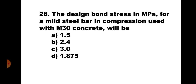Question 26. The design bond stress in MPa for a mild steel bar in compression used with M30 concrete will be: A. 1.5, B. 2.4, C. 3, and D. 1.875. From IS-456 for M30, the table value for plain bars in tension is 1.5. Since the bar is in compression, this value is increased by 25%, so 1.5 × 1.25 = 1.875. Hence, the correct answer is D. 1.875 N per mm square. Thank you.